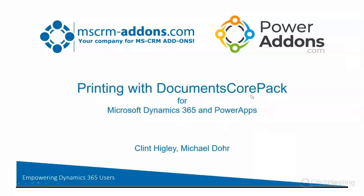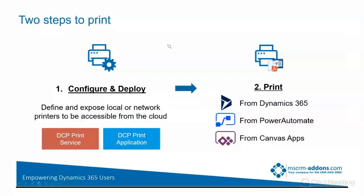So what does this entail? There are basically two steps to print. If you're already a DCP customer or you're planning on being one, there are only two things you need to do in order to print. There are two different types to be aware of: the DCP print service and the print application. You figure out which one best suits your needs, configure and deploy it, then define your printers. From there you'll be able to access those from Dynamics 365, Power Automate, or your Canvas apps.